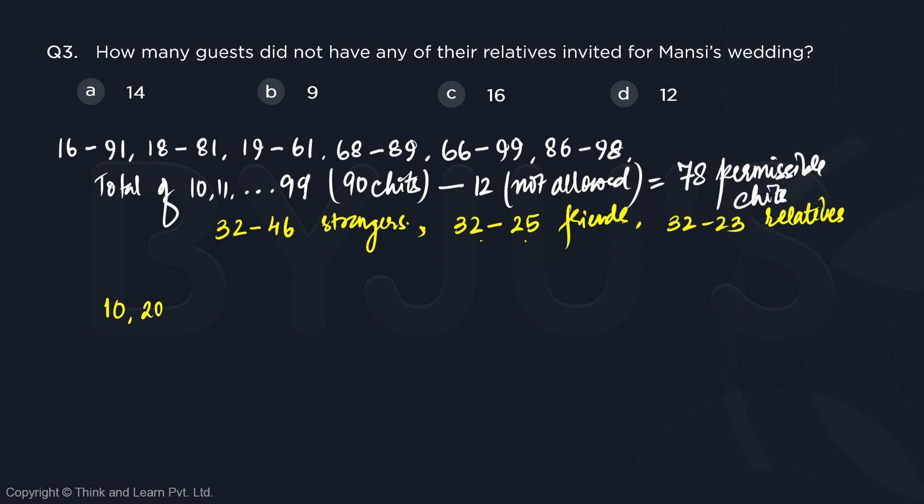So 10, 20, 30 and so on up to 90. So we have a total of nine such numbers here.